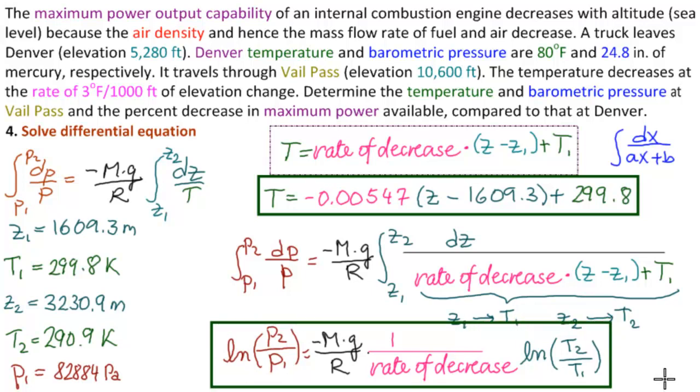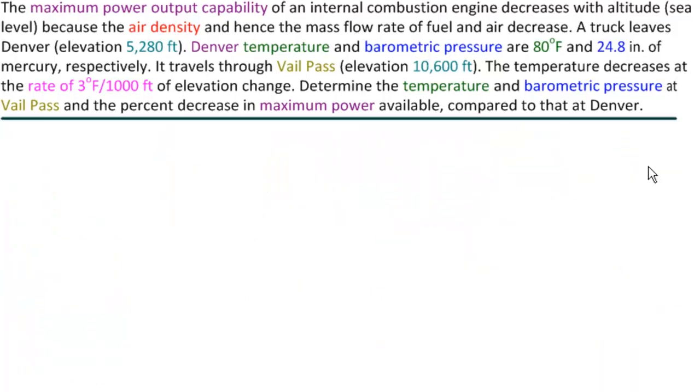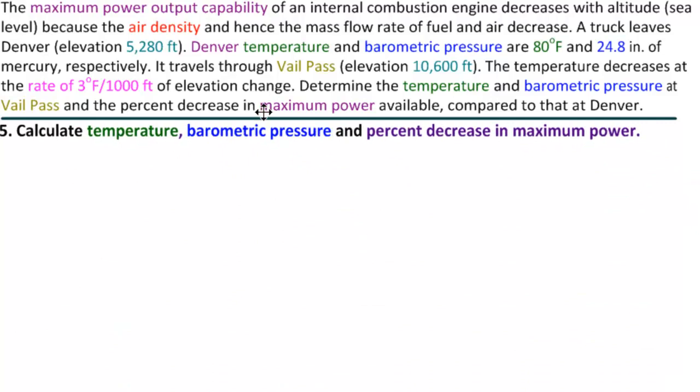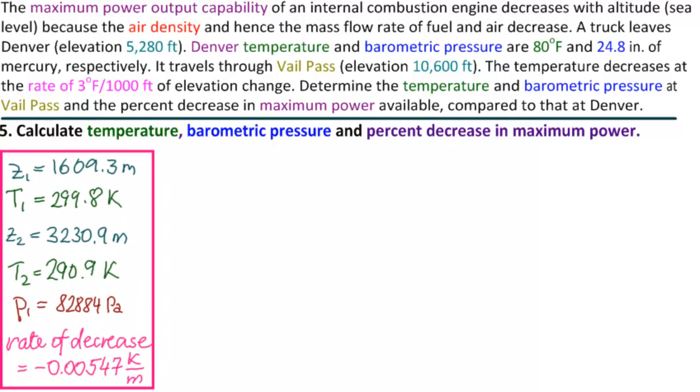On to our last part where we get our solution. So now we are finally at part 5 where we want to calculate what was asked of us. The temperature, the barometric pressure, and the percent decrease in maximum power at Vail Pass.